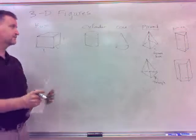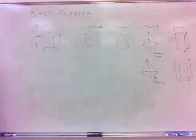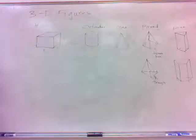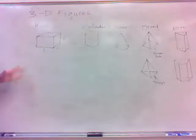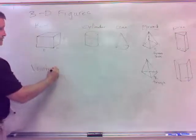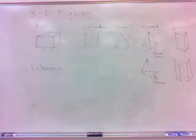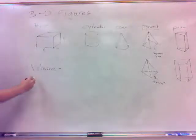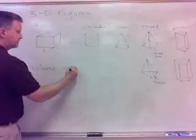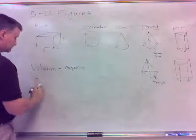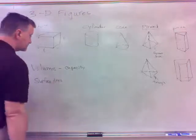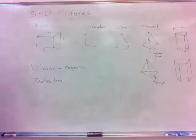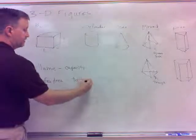Those are some of the basic shapes. Now, when we measure three-dimensional figures like a box or cylinder, there are two things we want to calculate. One is how much each one holds — that's the volume. Volume is one aspect we'll talk about for three-dimensional figures. The other is the surface area, which is the total area of all the surfaces.